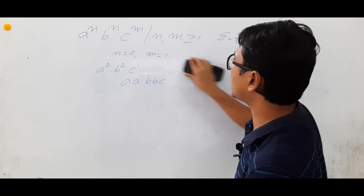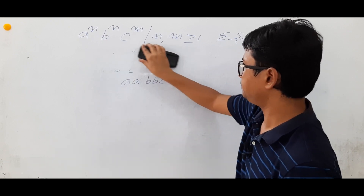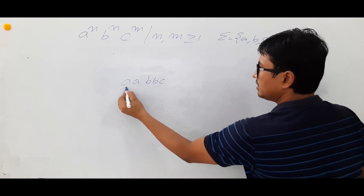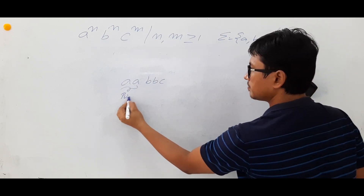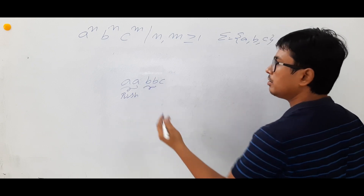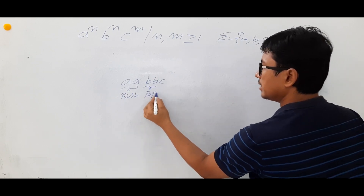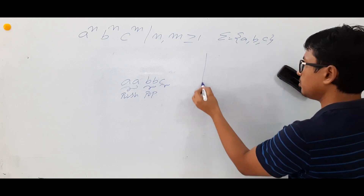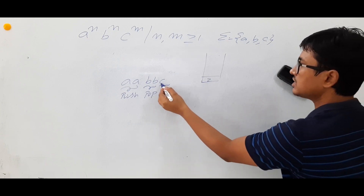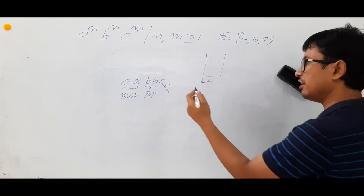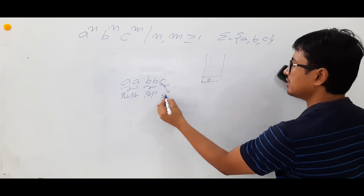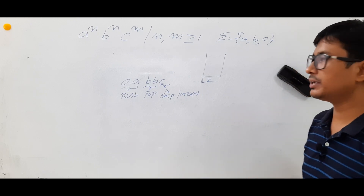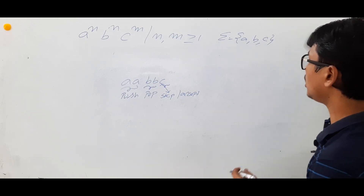To construct the pushdown automata: I will push all the a's onto the stack. For all the b's, I will pop the a's. Then I will find an empty stack with only the bottom-of-stack symbol Z remaining. Once I see a c and Z, I will keep it as Z and accept — meaning I will skip it and accept.